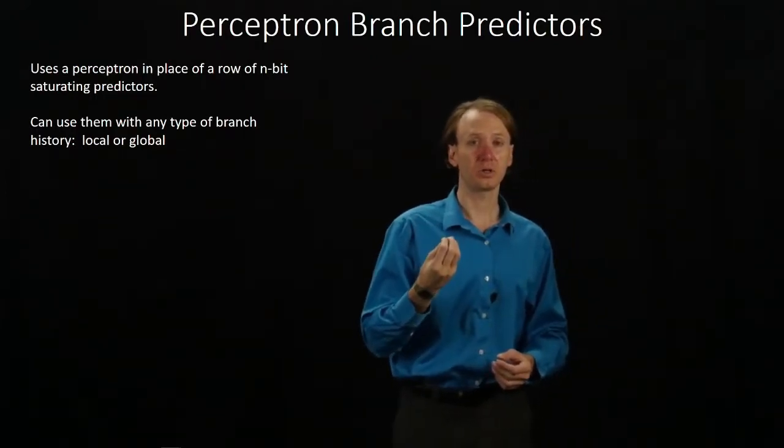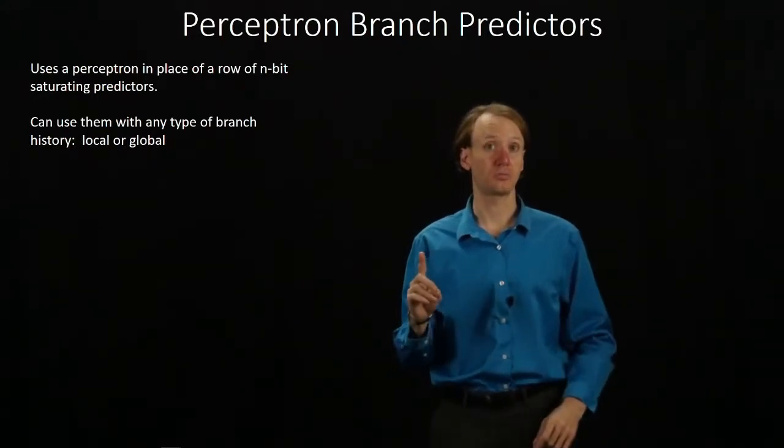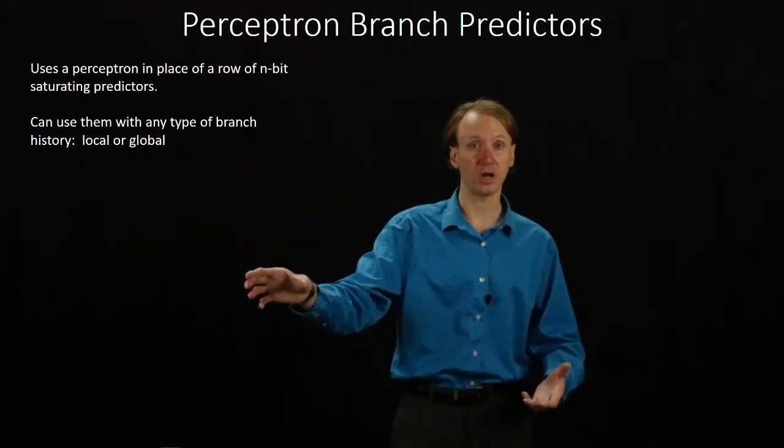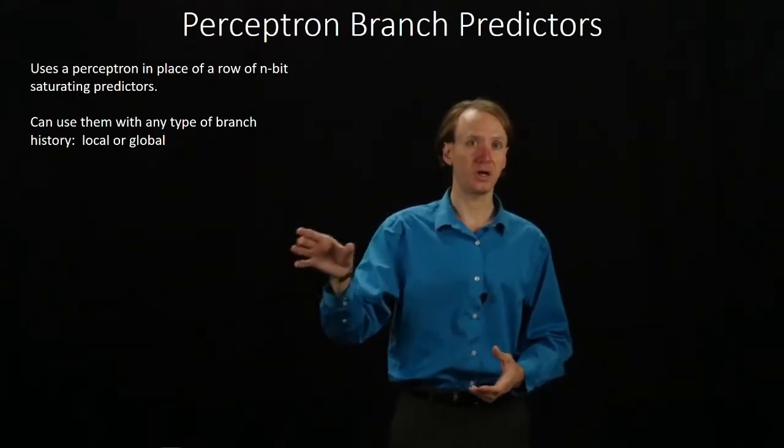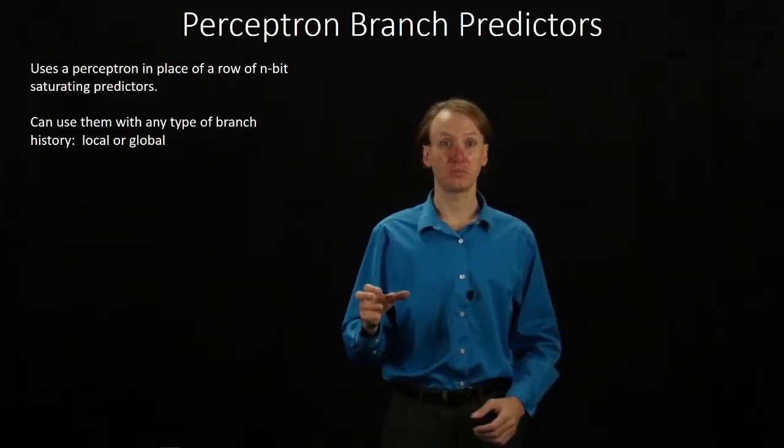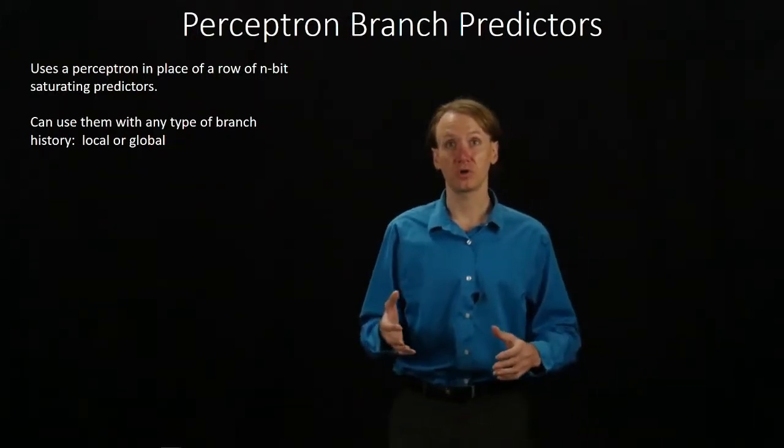In this case, we're going to be able to replace an entire row with one perceptron predictor. So we'll still need to use the address of our branch, but that will be enough to find the perceptron that we're interested in. Then we'll be feeding the branch history into the perceptron.